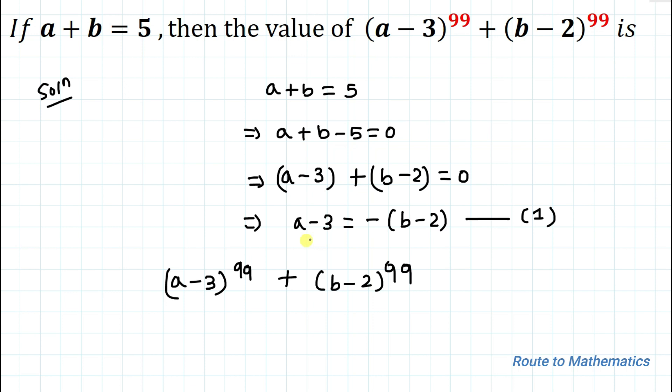From equation 1 we have a minus 3 equals minus of b minus 2. Let's substitute the value of a minus 3 here. So we have minus of b minus 2 whole to the power 99 plus b minus 2 whole to the power 99.